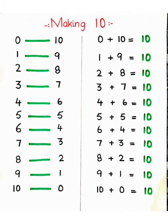First, you will write counting 0 to 10. Then, backward counting 10 to 0. Let's start making 10.